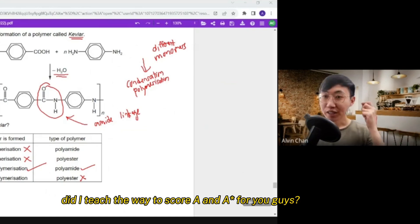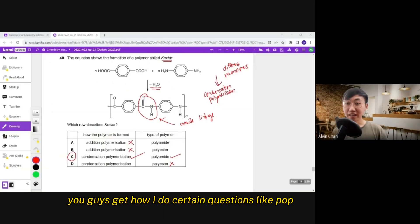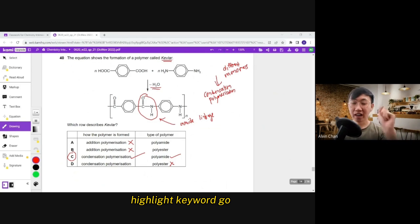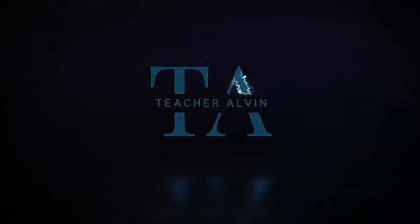Did I teach the way to score A and A star for you guys? You guys get how I do certain questions like pop pop pop. One second. Highlight keyword go. Highlight keyword go. One second thing. Highlight keyword go. One second thing.